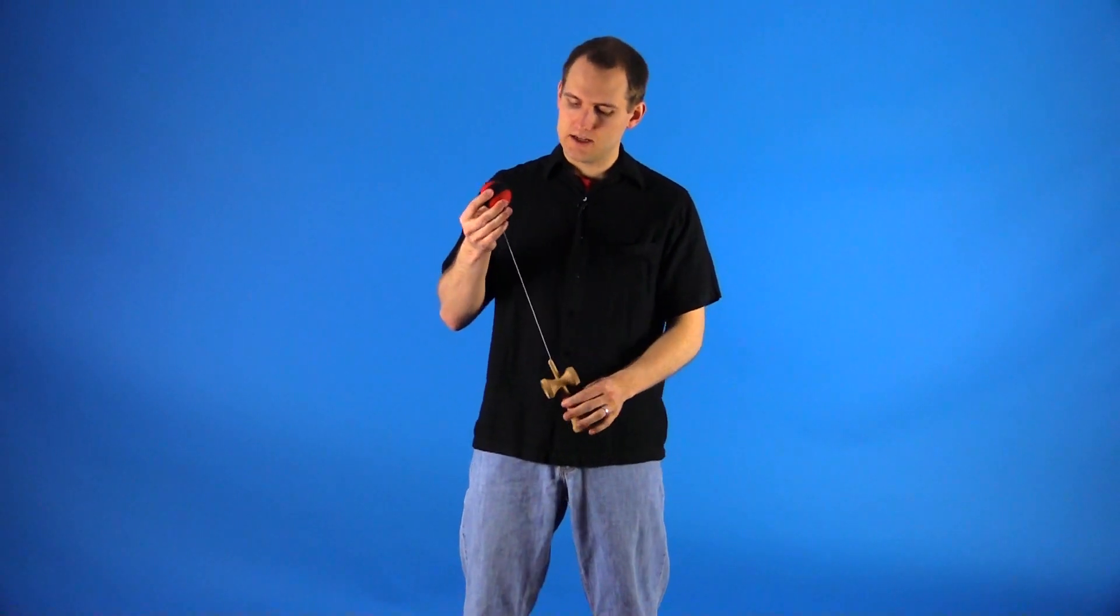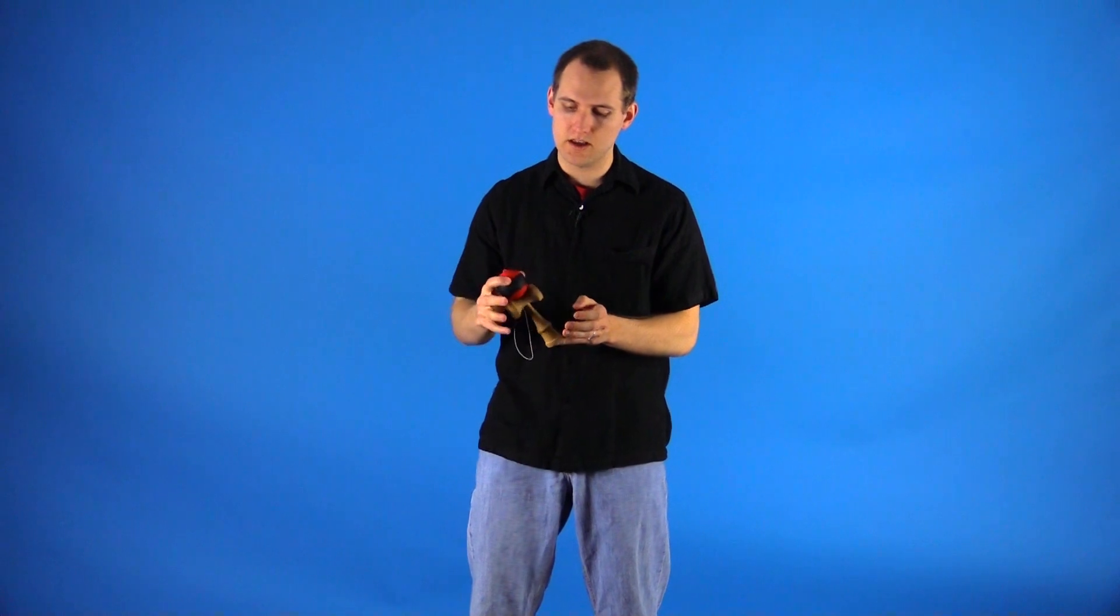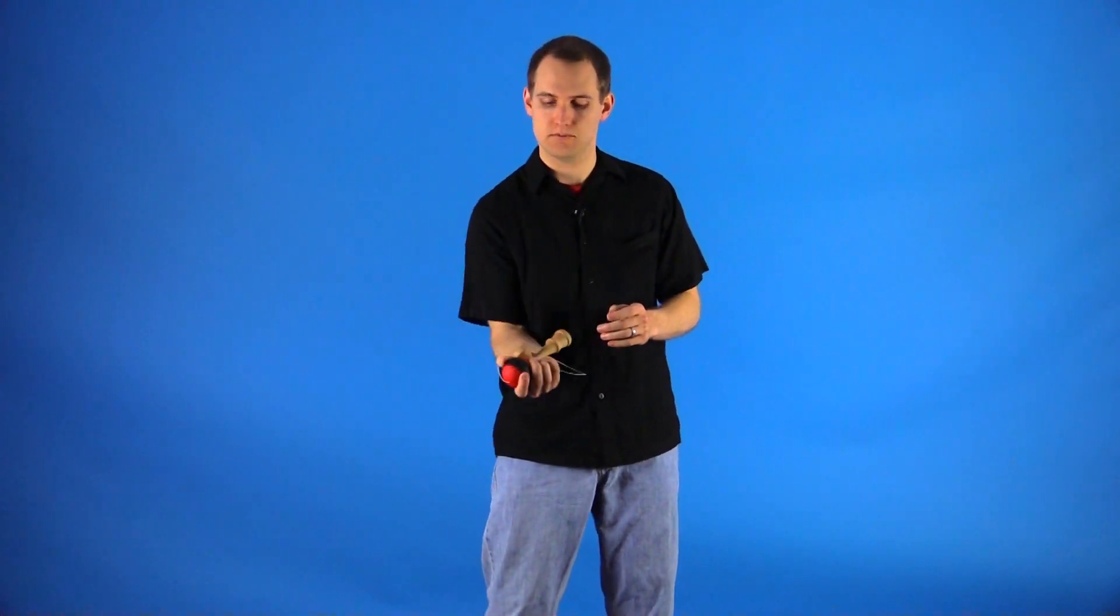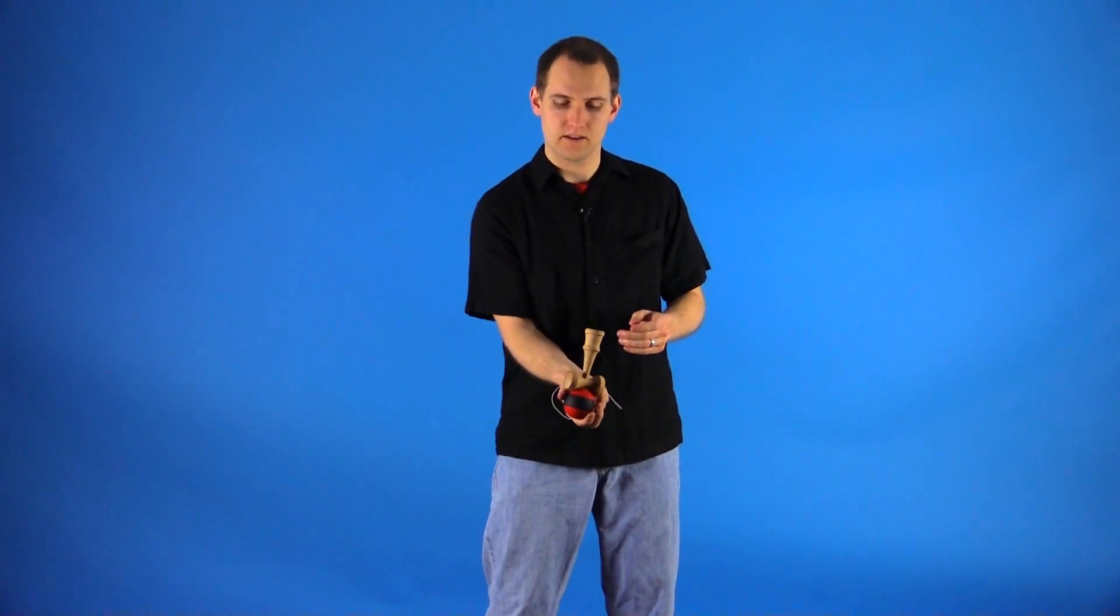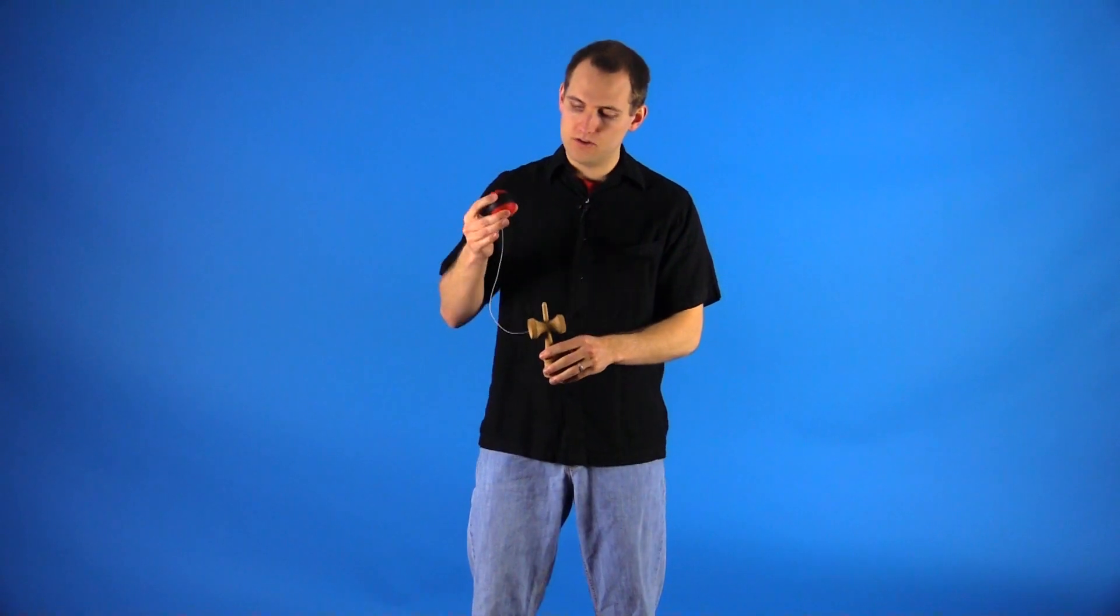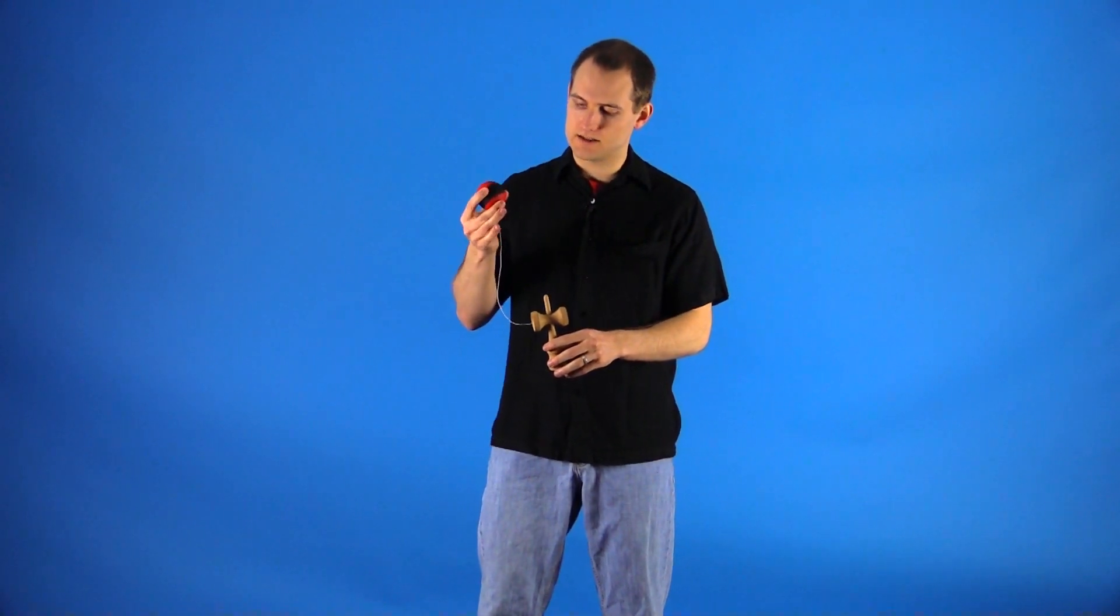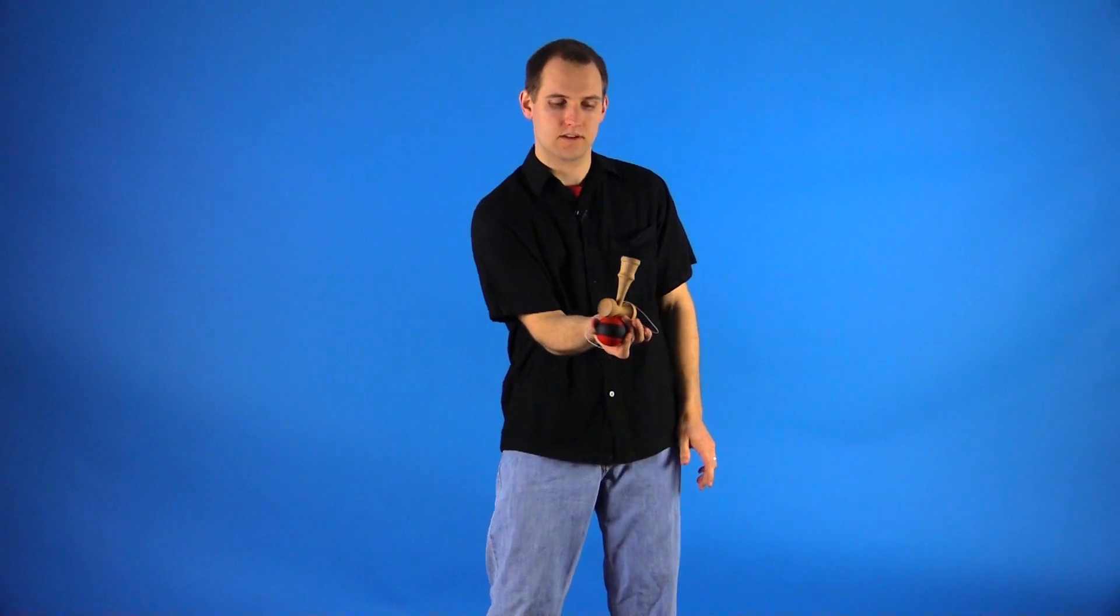The other thing about this trick is as you are doing that turn, you should not ever make contact with the Kendama. You should not be holding it or balancing the Kendama with your hand. All the contact is made only on the Tama, so you should be able to make the turn and everything without grabbing onto the Kendama.